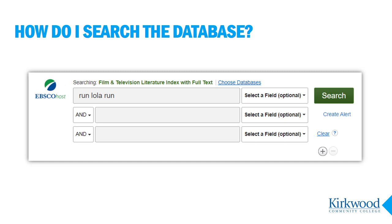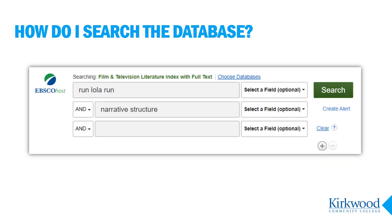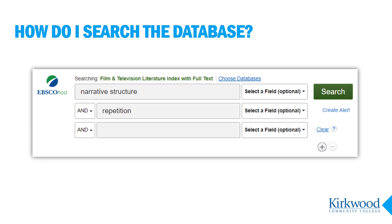Sometimes you're not looking for just anything about a film — you're looking for something specific about the film. For example, for Run Lola Run, maybe I want to read about the unique structure of the storyline and how it repeats the same story multiple times. So I'll try adding the keyword phrase "narrative structure" to my search. Notice that for each aspect of the topic, I put the word or phrase in its own search box. Another tip when running keyword searches is to play around with the terms and different ways to look at your topic.